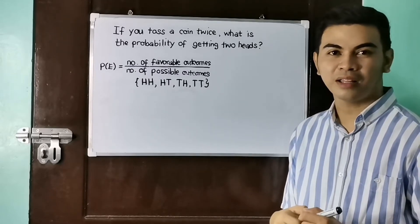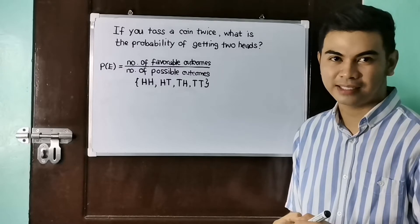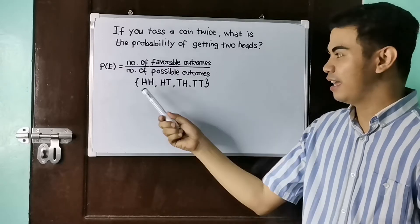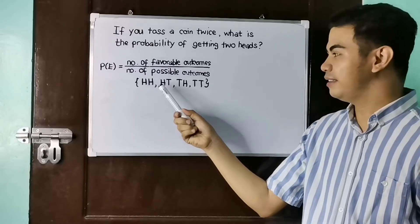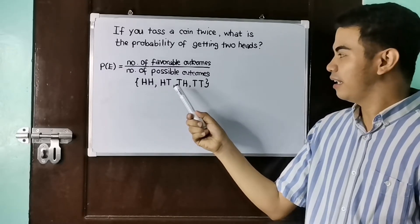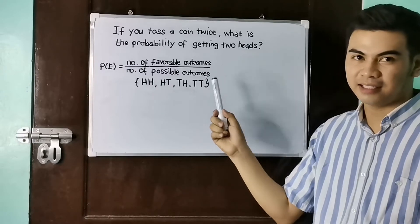I listed all the possible outcomes when we toss a coin twice. So we have here: head-head, head-tail, tail-head, and tail-tail.